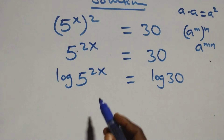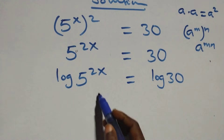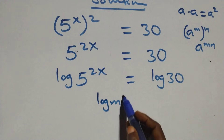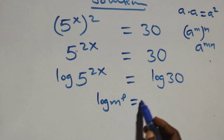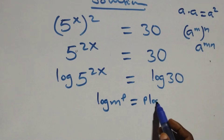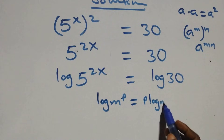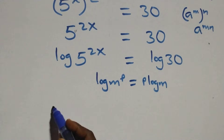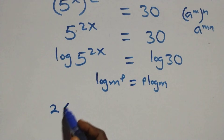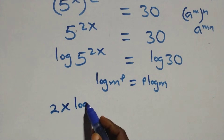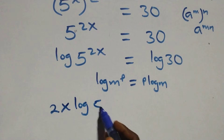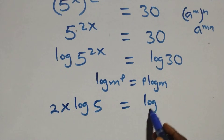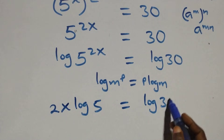Here we apply the power rule of logarithms: when we have log of m raised to power p, this is the same as p·log m. At this point, we have 2x·log 5 equals log 30.